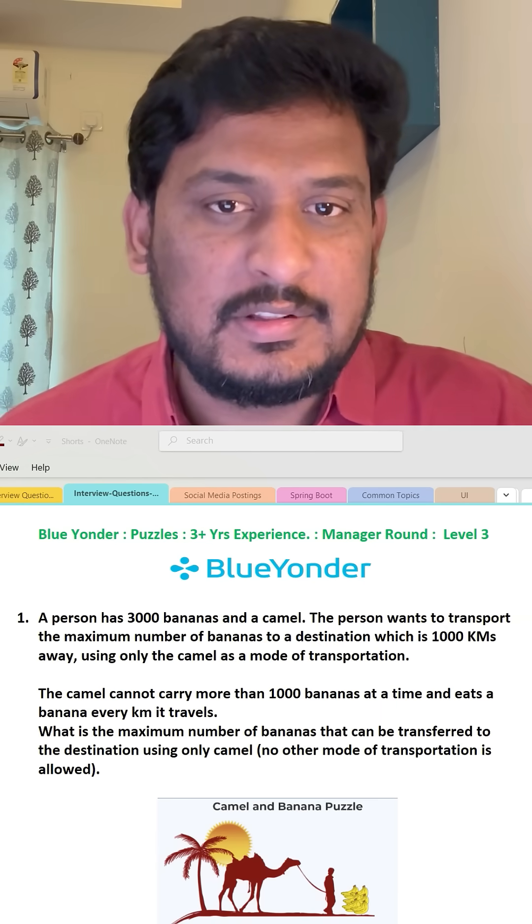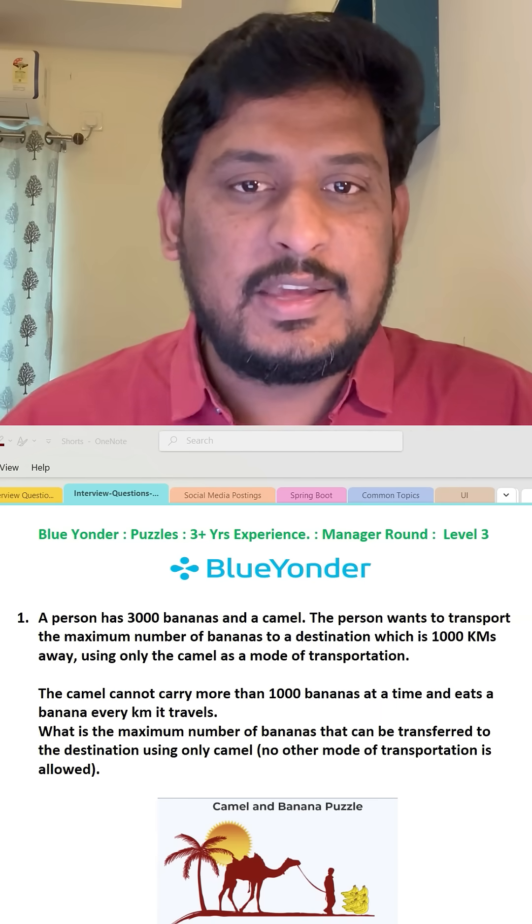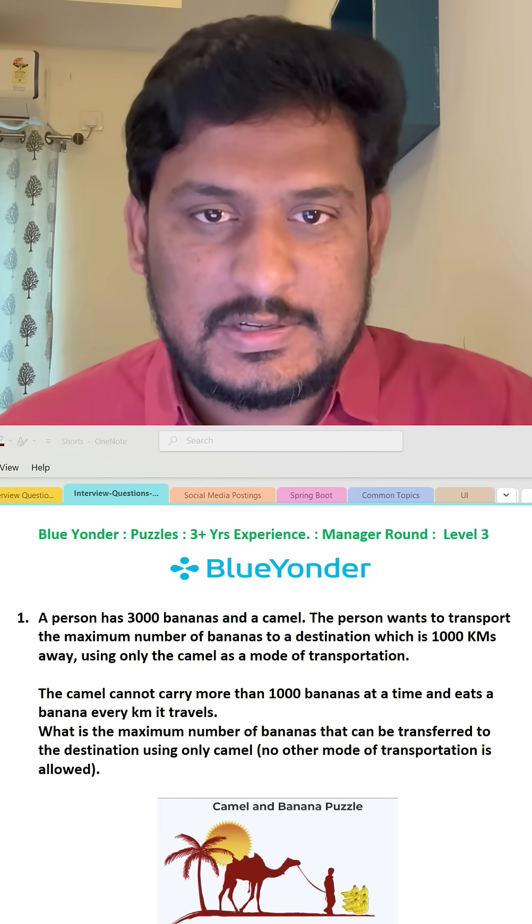The manager provided two kinds of puzzles. The first puzzle: In a desert, a person has a camel and 3000 bananas. He has to transport those bananas using the camel from one location to another location with a 1000 kilometer destination.